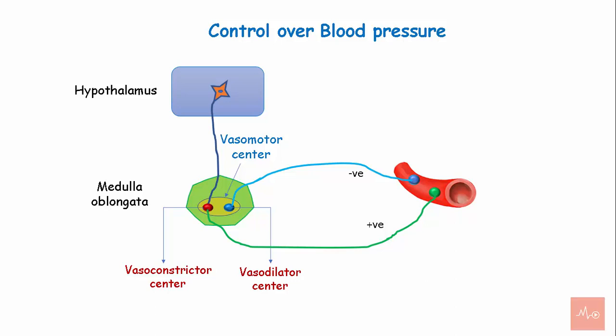When the lateral and posterior nuclei of the hypothalamus are stimulated, the vasoconstrictor area of the vasomotor center in the medulla sends signals to blood vessels causing vasoconstriction, and there is an increase in blood pressure.